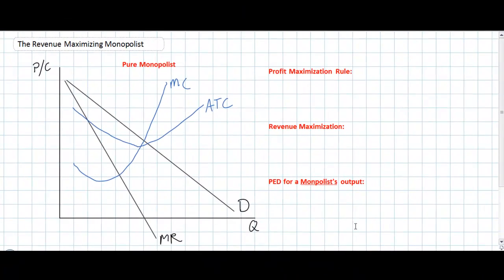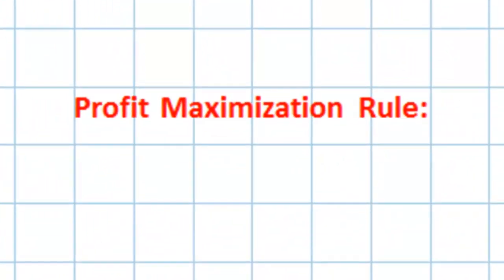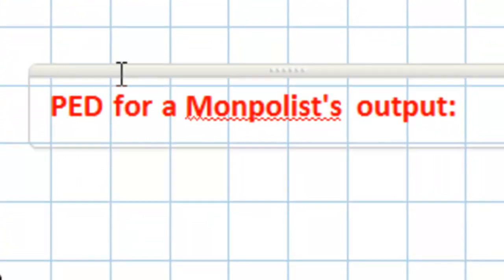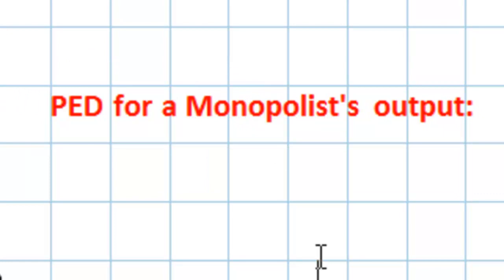In today's lesson we're going to explore three different concepts relating to pure monopoly. First, we're going to revisit the profit maximization rule from perfect competition and determine whether the same rule applies to a monopolist. We'll compare the profit maximizing level of output to the revenue maximizing level of output. Finally, we'll look at the price elasticity of demand and determine over which range of output demand is relatively elastic and over which range it is relatively inelastic for a monopolist's product.